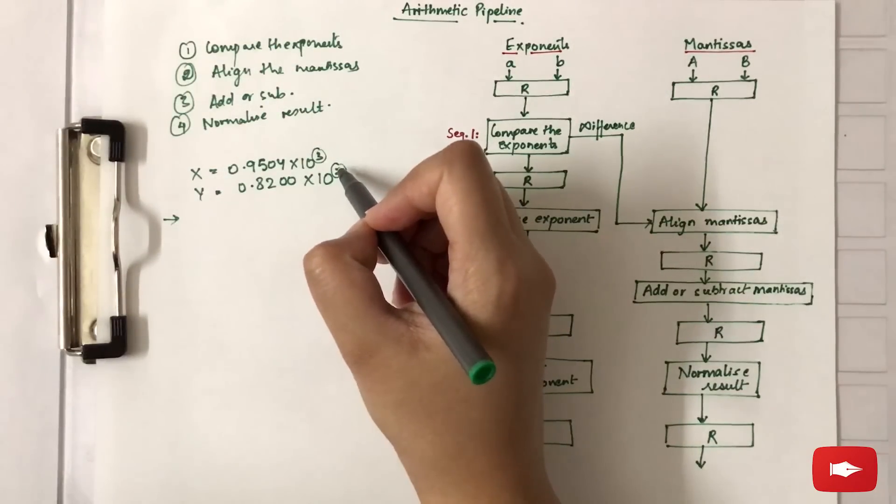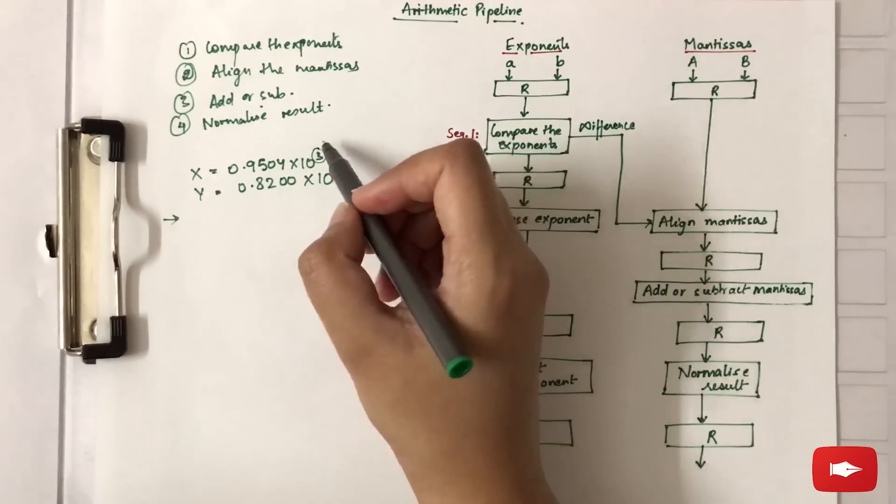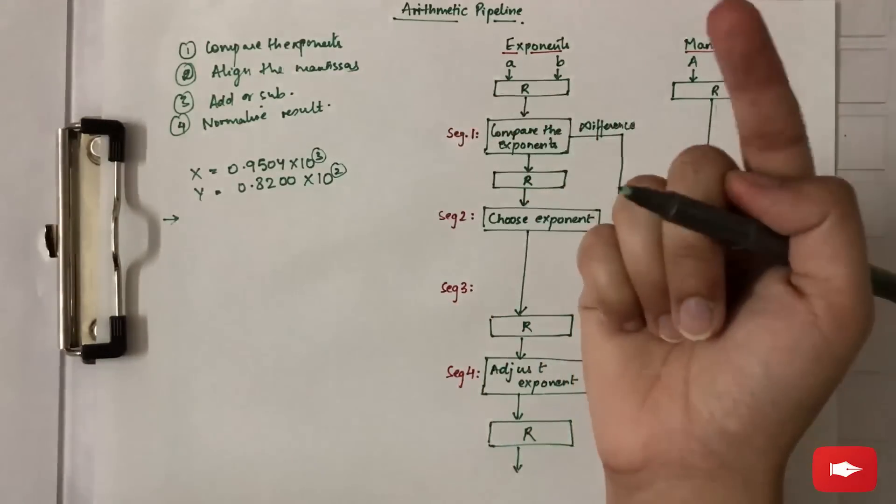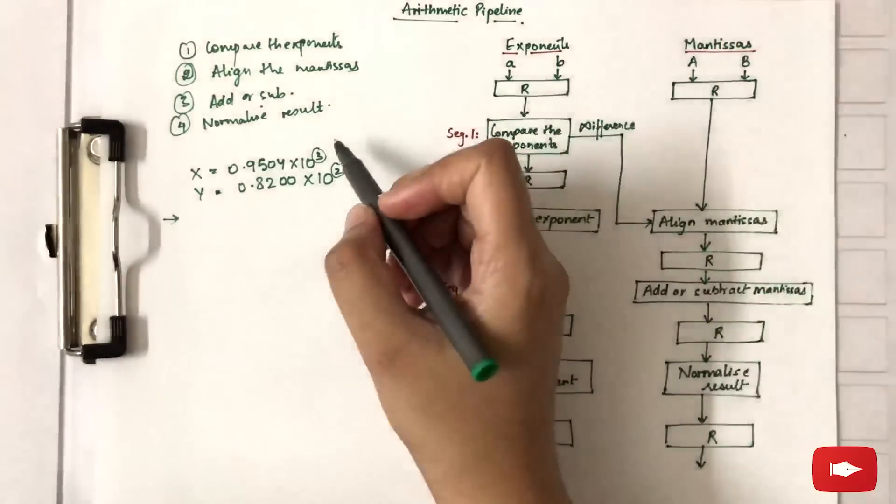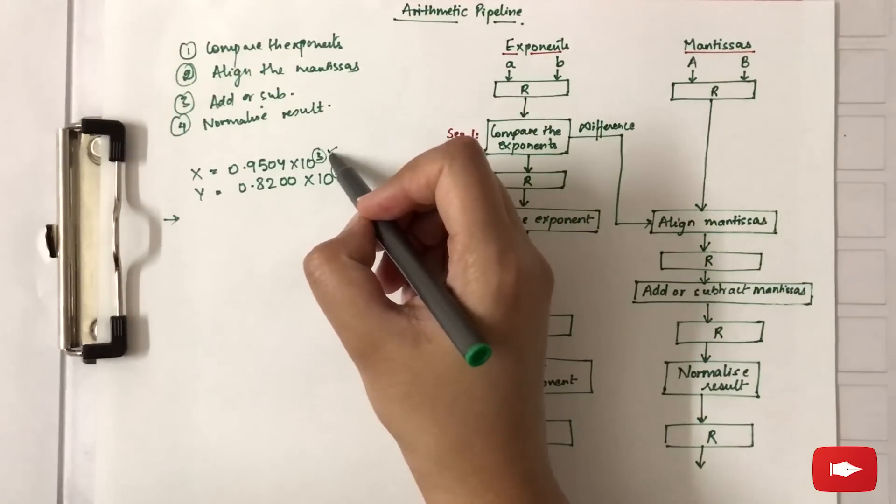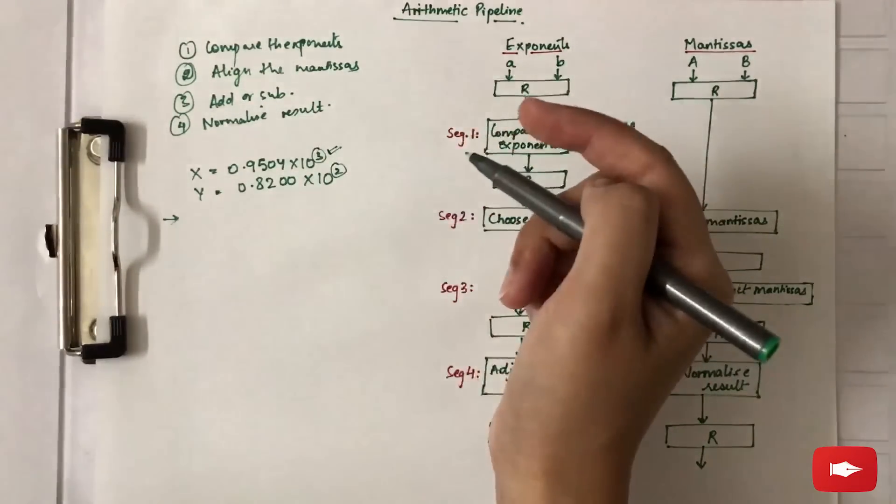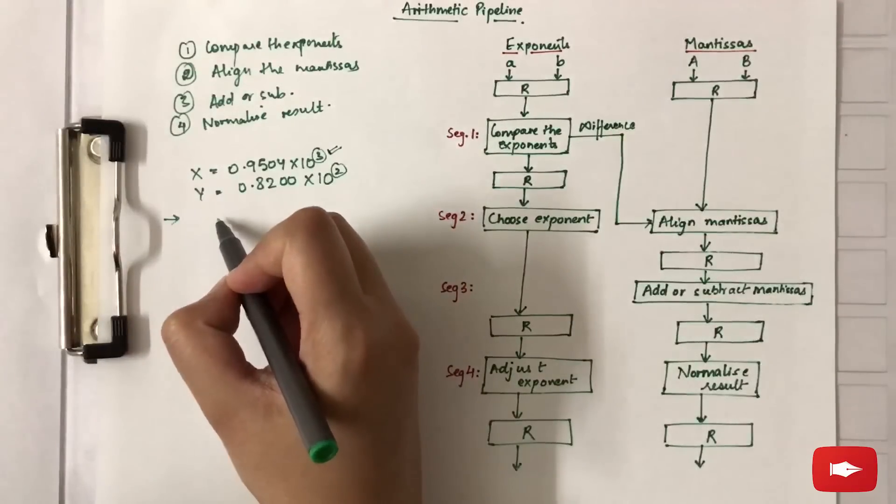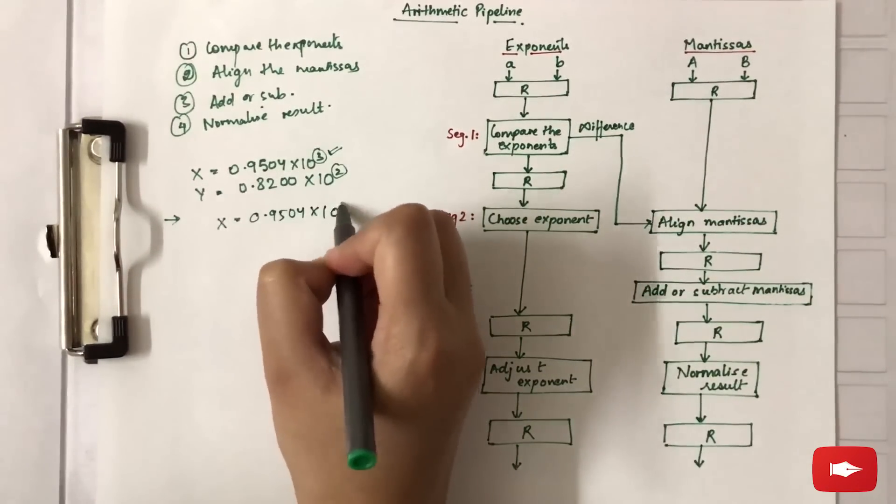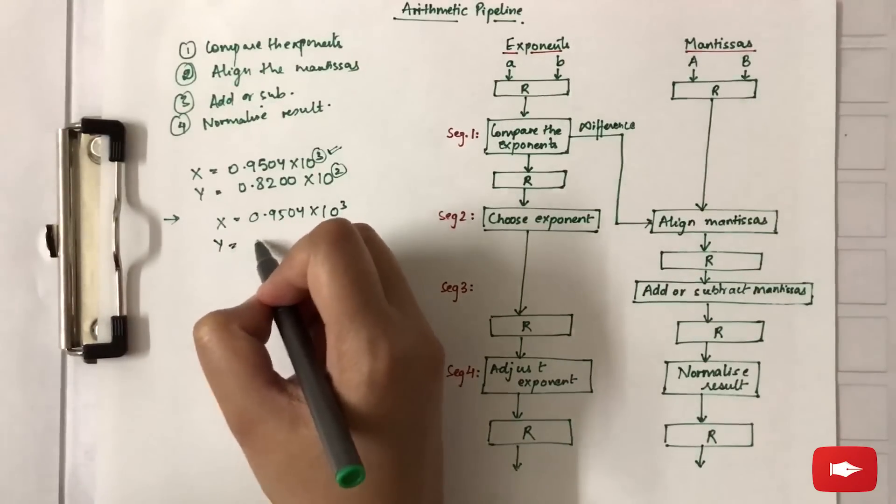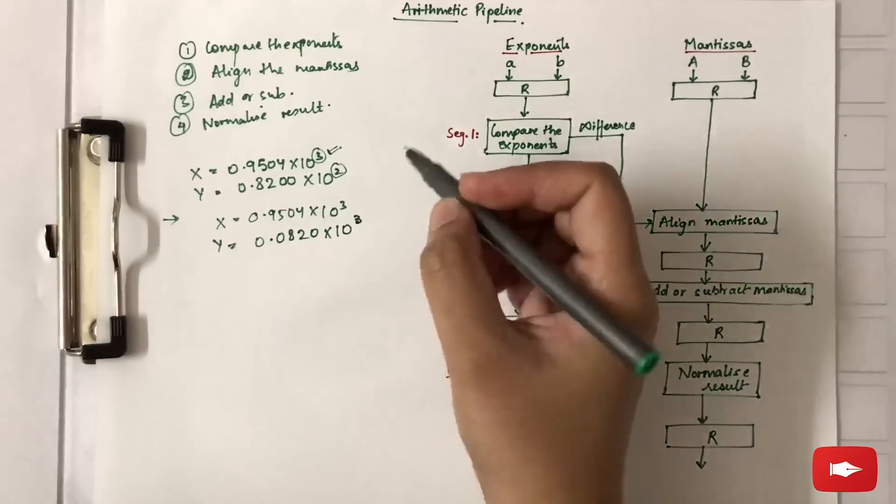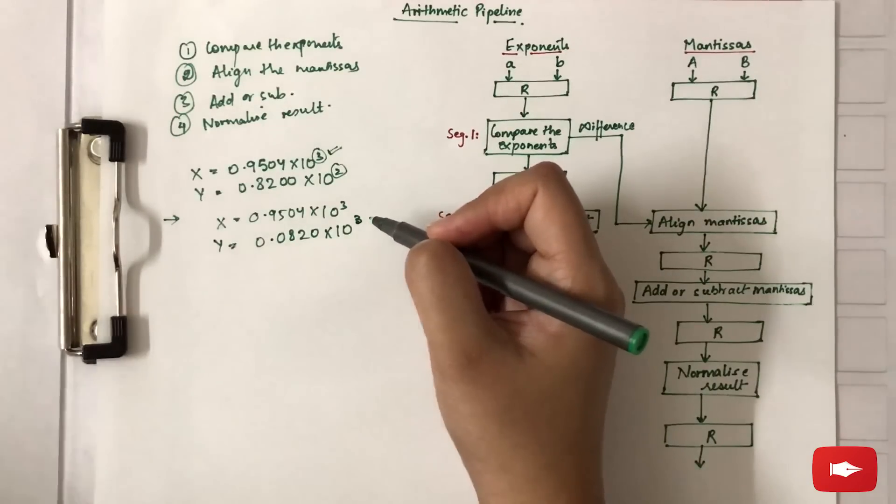Here, the exponent 3 is greater, therefore the result will also have exponent 3. Because we have chosen the larger exponent, we align the mantissas accordingly. After alignment, X = 0.9504 × 10³ and Y = 0.0820 × 10³. Now that the exponents are the same...